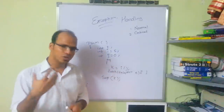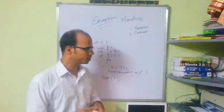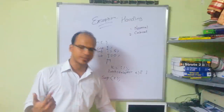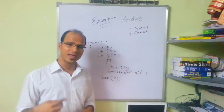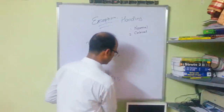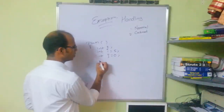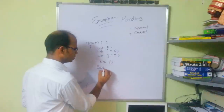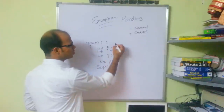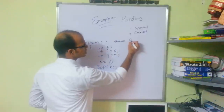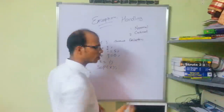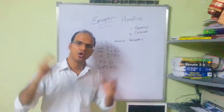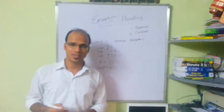We will do practical implementation in the next example. There is also one more shortcut: if you don't want to use try-catch, you can use a keyword called throws exception. For a particular statement you can apply try-catch; for the whole method you can apply throws exception. So you have these two approaches for exception handling.